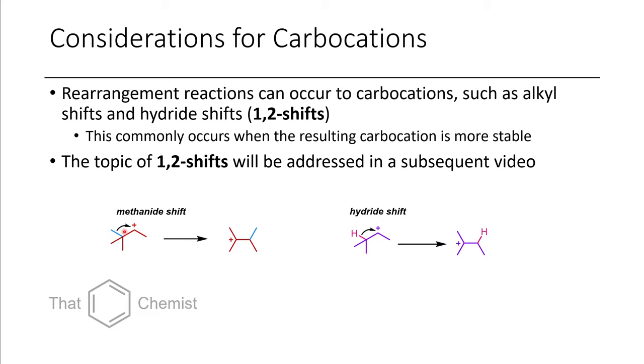Similar to carbon groups shifting, it's also possible to have hydrogen shift. So this would be a hydride shift, for instance. We can also have other groups besides these migrating, but these are the two that are commonly talked about when discussing E1 elimination, especially.